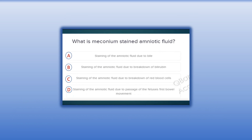What is meconium-stained amniotic fluid? A. Staining of the amniotic fluid due to bile. B. Staining of the amniotic fluid due to the breakdown of bilirubin. C. Staining of the amniotic fluid due to breakdown of red blood cells. D. Staining of the amniotic fluid due to passage of the fetus's first bowel movement.